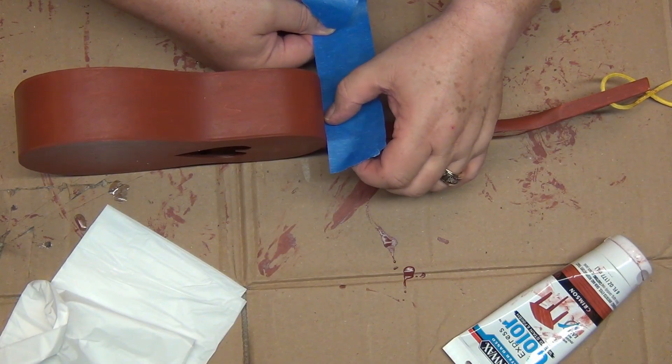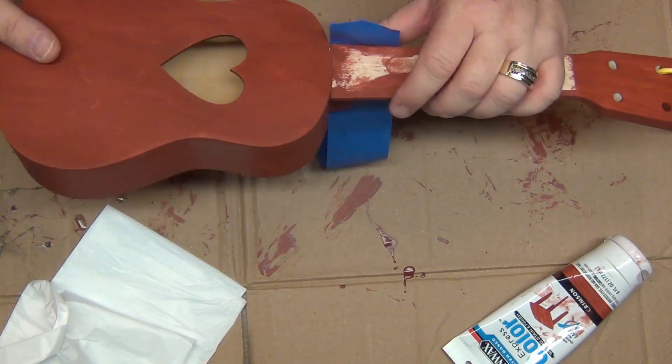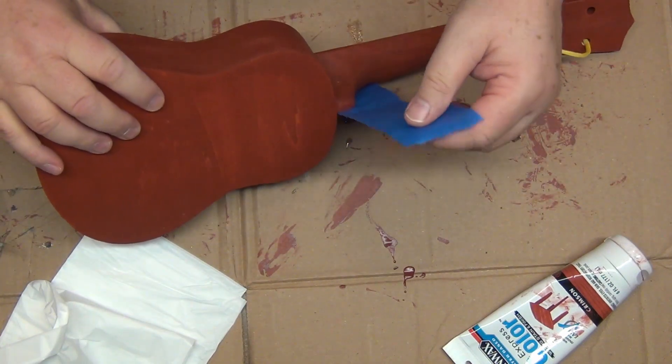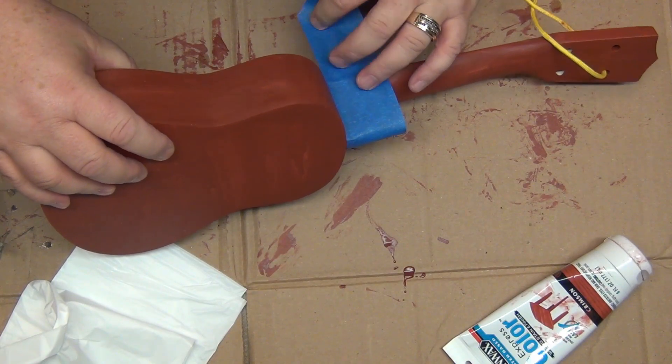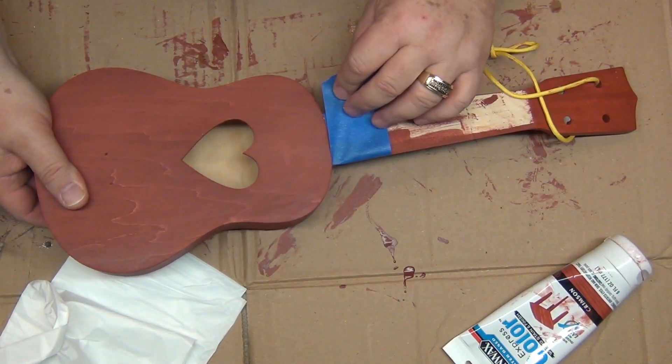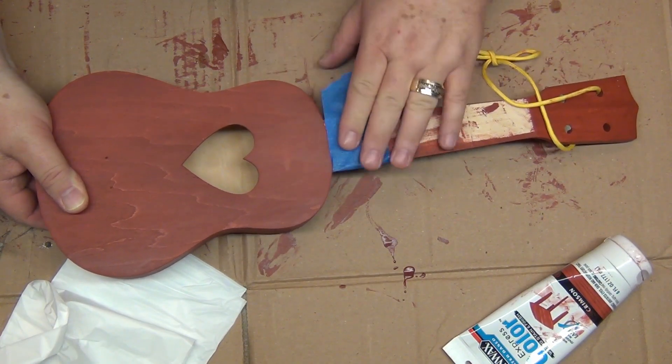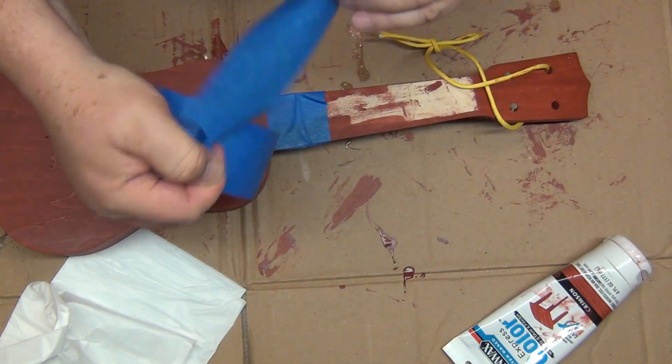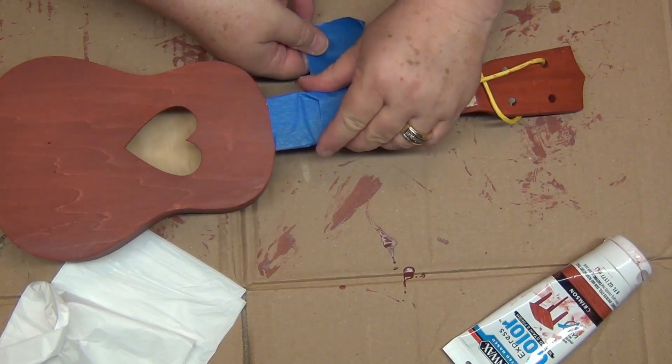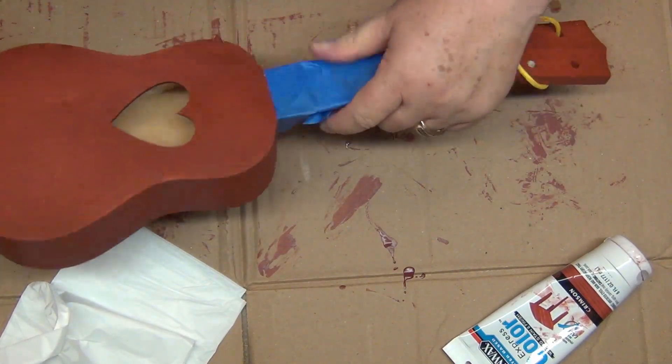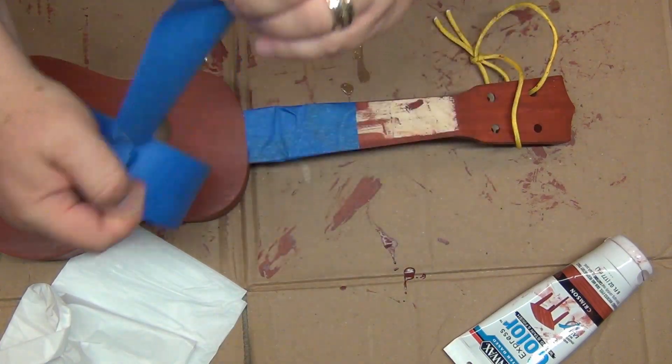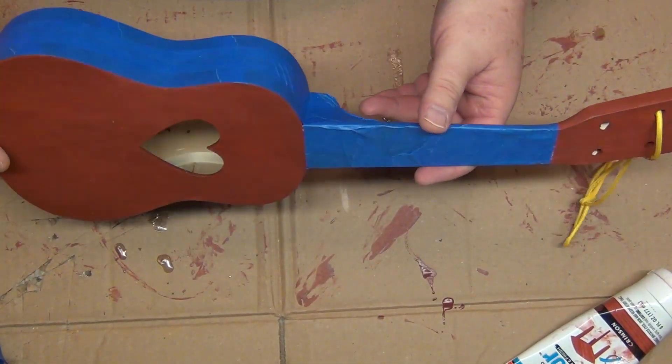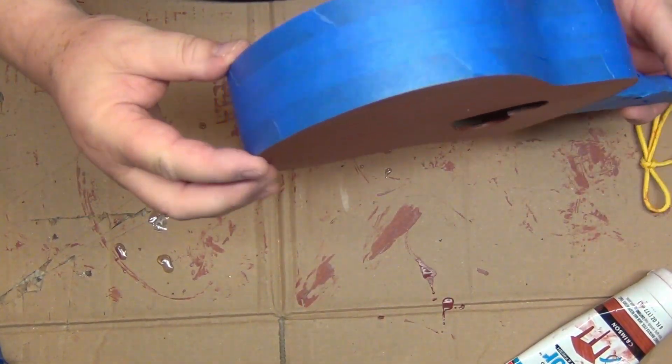Next, I taped off everything that I did not want to get black paint on - the entire neck and the sides of the ukulele. After that was done, we go paint.